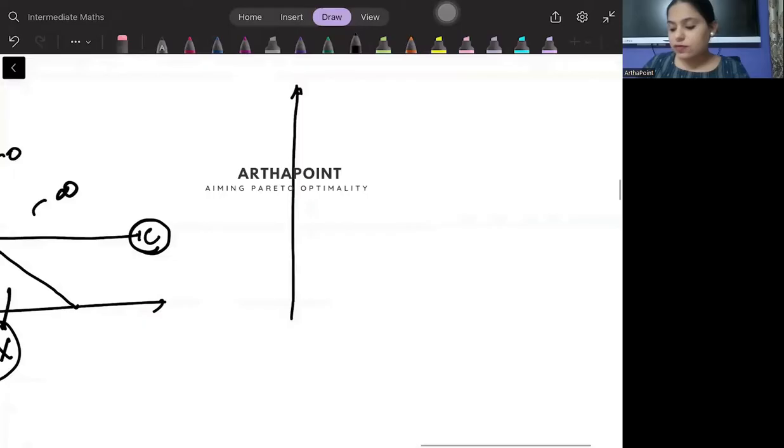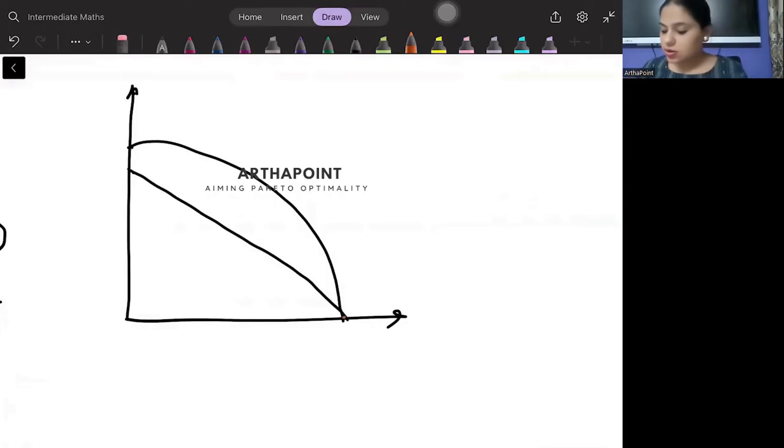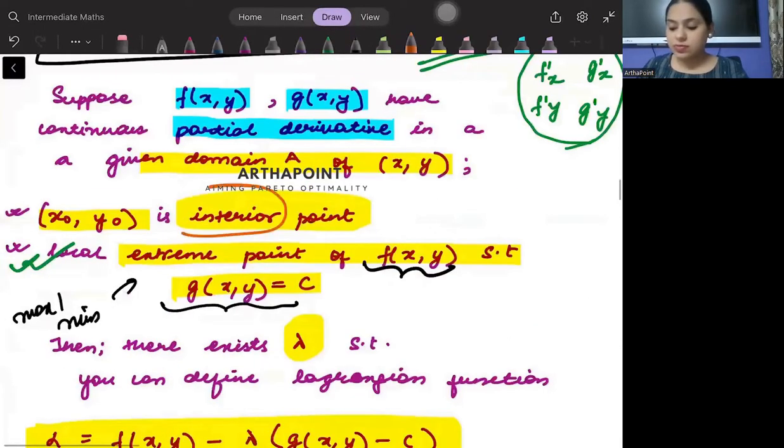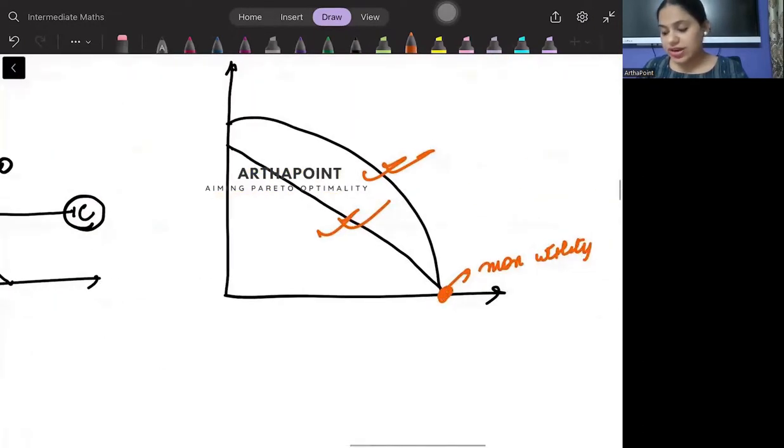Or we take the example of concave function. In concave function, what happens na? That given your budget, aapka maximum utility yaha hoti hai. Toh yeh continuous hai. Yeh continuous hai. But you are not having an interior point. You are having the maximum utility at the outer points. Then you can't use Lagrange.